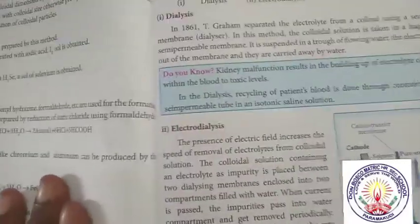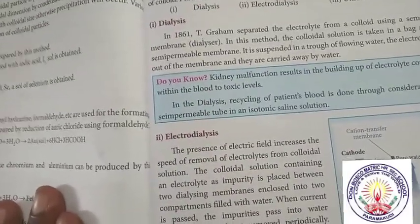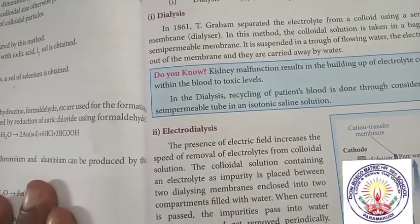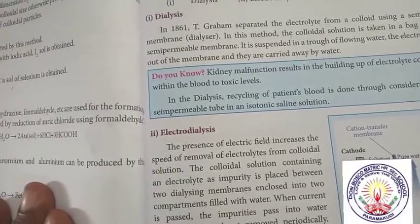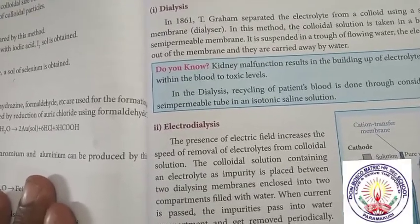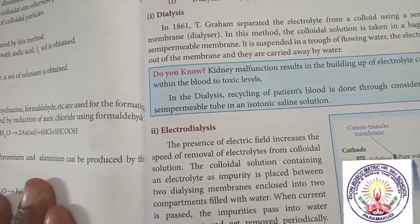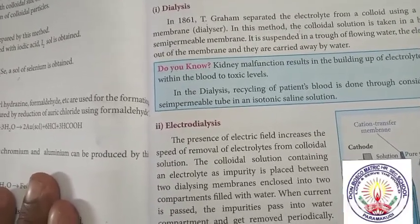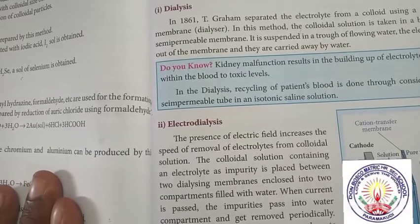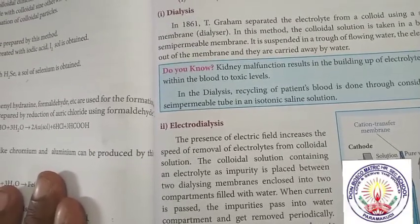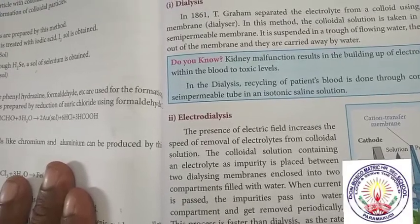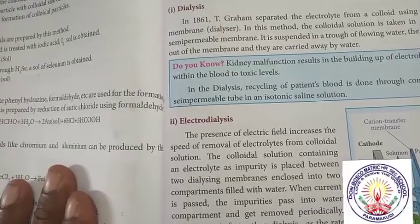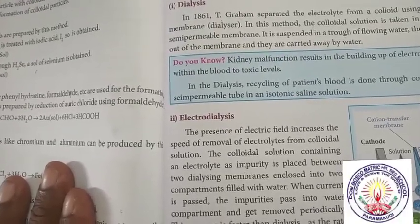Electrodialysis: the presence of an electric field increases the speed of removal of electrolytes from colloidal solution. The colloidal solution containing an electrolyte as impurity is placed between two dialyzing membranes enclosed into two compartments filled with water. When current is passed, the impurities pass into the water compartment and get removed periodically. This process is faster than dialysis, as the rate of diffusion of electrolyte is increased by the application of electricity.